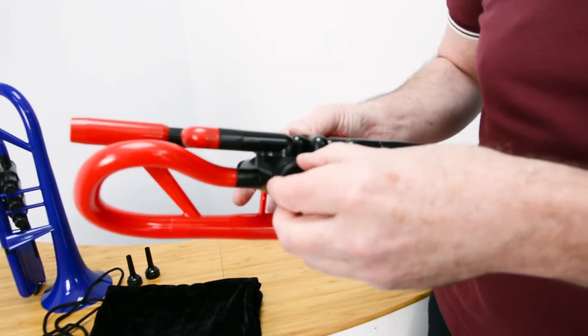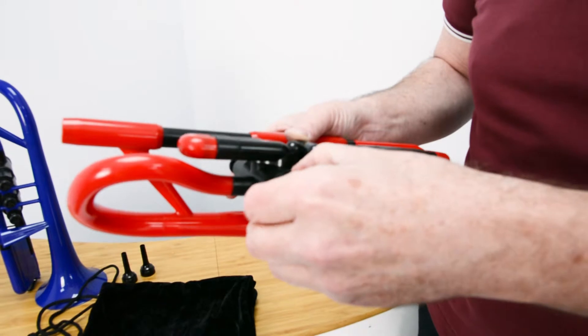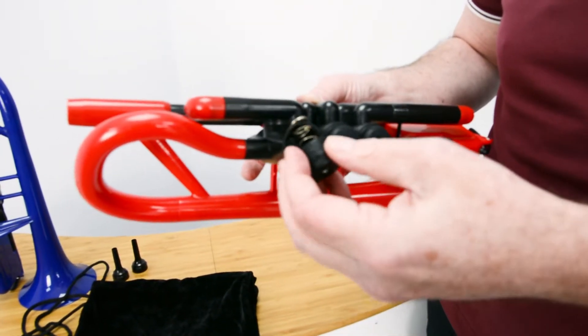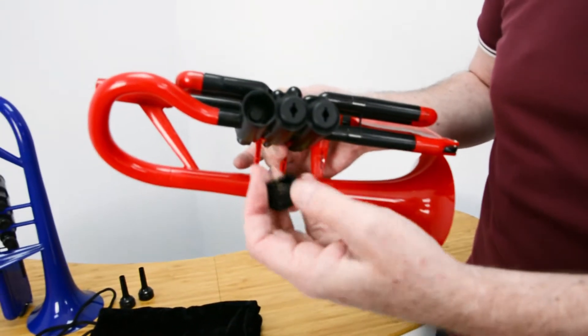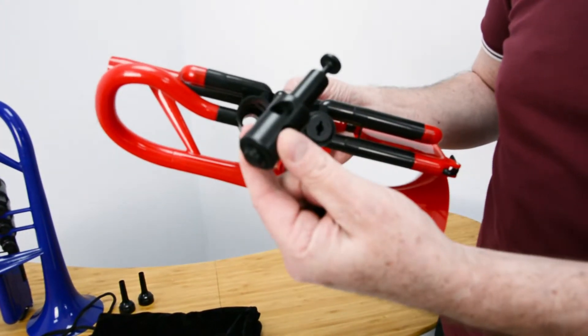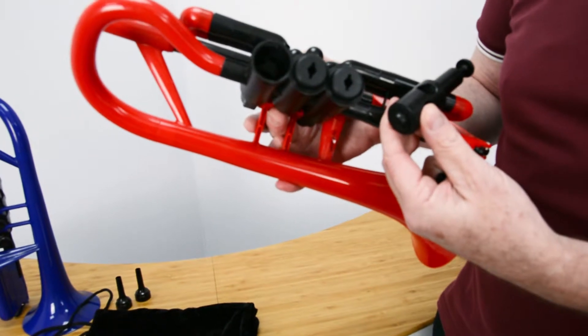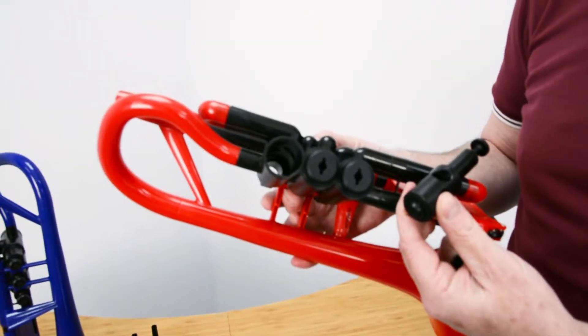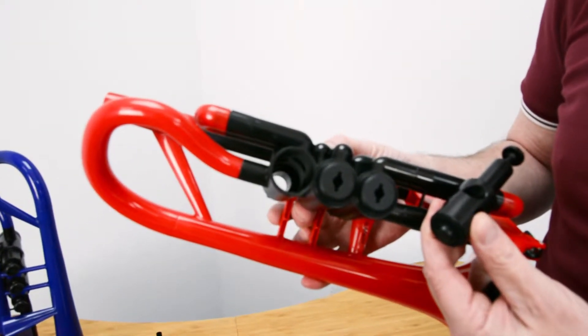You can remove each valve individually by taking out the bottom cap and spring, and then you can push the valve all the way out so that it can be washed, and the inside of the valve housing can also be washed out simply.